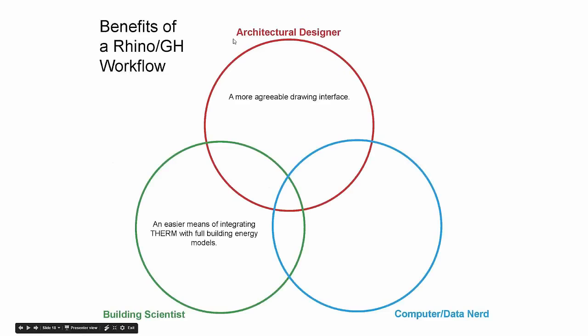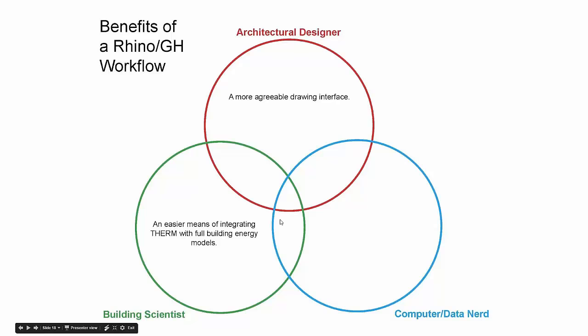From the architectural design standpoint, we get a more agreeable drawing interface. From the building science perspective, one of the biggest things is it's going to be an easier means of integrating Therm with full-building energy models. I purposely tried to make the Therm components as tightly connected to the energy simulation components so it's easy to walk between those two worlds. Having a parametric interface for Therm via Grasshopper also opens up interesting research possibilities.